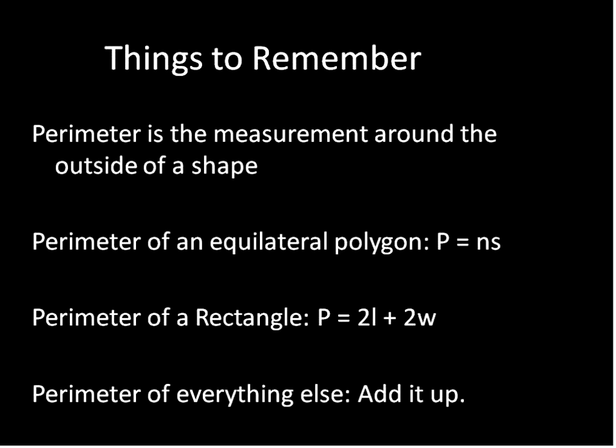A couple of things to remember: perimeter is the measurement around the outside of the shape. The perimeter of an equilateral polygon is the number of sides times the length of a side. The perimeter of a rectangle is 2 times the length plus 2 times the width. And for everything else, just find all the side lengths and add them up.